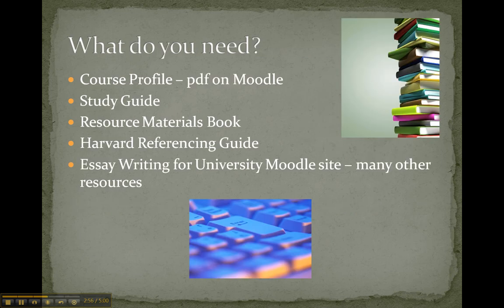So what do you need? You're going to need a copy of the course profile — there'll be a link to a PDF document of that on the Moodle website. You will need the study guide, the resource materials book, and the Harvard referencing guide. Those three books will be supplied to you in hard copy and will also be available online as PDF documents on the Moodle website.